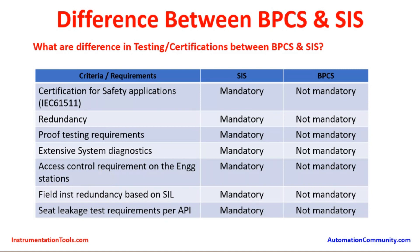Access control requirements on the engineering stations: for each system there are independent engineering stations available to make program changes on the BPCS or SIS, with hierarchies to control access decided by the respective plant head and protection owner. Only people with much experience on the particular process plant, thoroughly knowledgeable in process and safety instrumentation, can make program changes in the SIS system. Whereas in the BPCS system, more personnel have the right to make changes. Field instrument analysis based on safety integrity level is mandatory for SIS and not mandatory for BPCS.